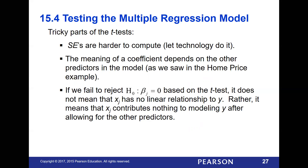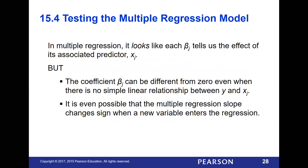If you just had that one variable by itself, you might find a relationship, or if you remove some other predictor variables this x might contribute more. In multiple regression, each slope tells us the effect of its predictor on y. A coefficient can differ from zero even when there's no simple linear relationship between the two. It's also possible that a multiple regression slope changes sign when a new variable enters the regression.